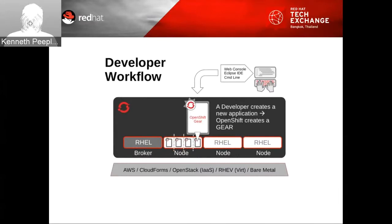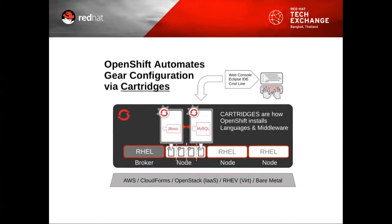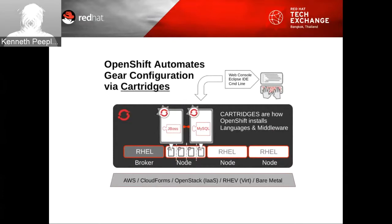When a developer creates an application using the web console, the IDE, or command line, OpenShift creates a gear. The configuration of gears is done via cartridges, and cartridges are how OpenShift installs languages and middleware.